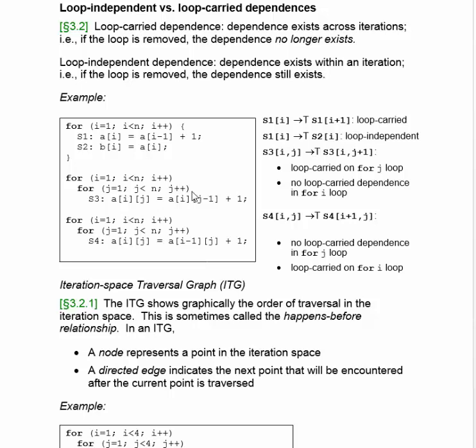Now in S3, notice that there is a subscript of j on the left-hand side and a subscript of j-1 on the right-hand side. This means there's a loop-carried dependence on j, because the value written in the j-first iteration is going to be used on the j-th iteration. But there are no dependences in the i-direction — the i-th row does not depend upon the i-plus-first or i-minus-first row, so we could actually compute all of the rows in parallel.